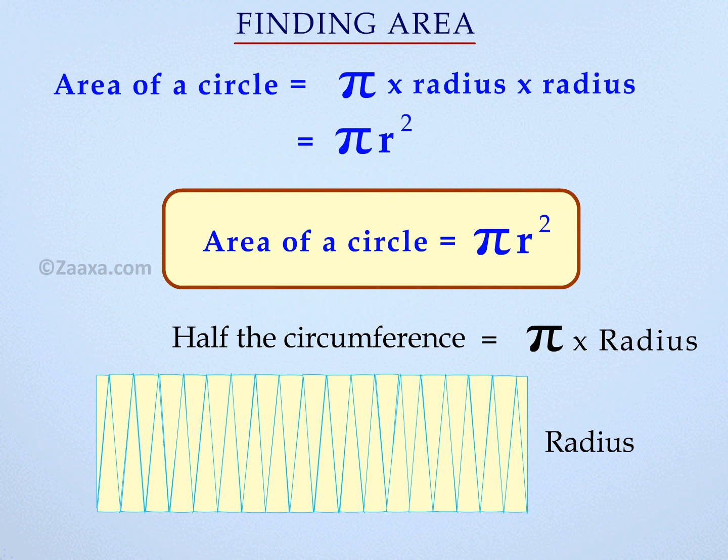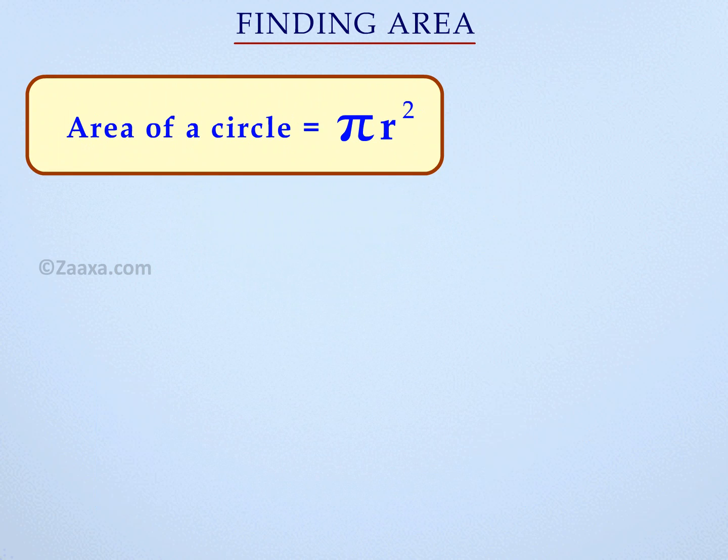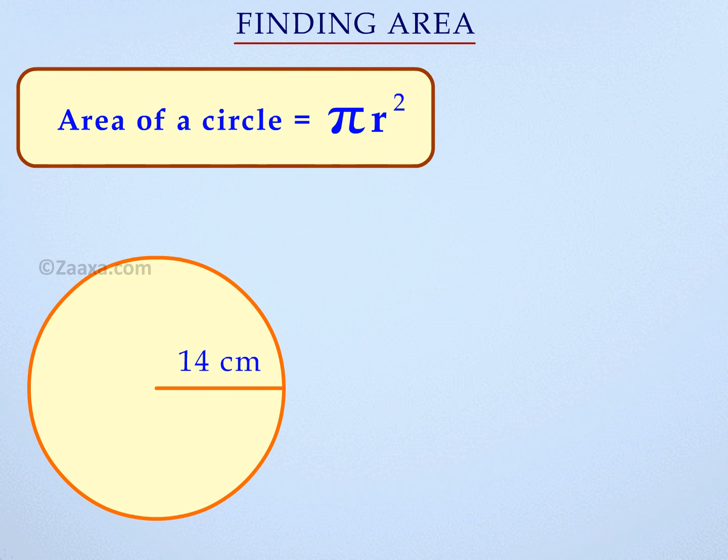Thus, to find the area of a circle we use the formula pi r squared. Let us find the area of a circle whose radius is 14 cm. Area is equal to pi r squared, 22 over 7 times 14 times 14 is equal to 616. Hence the area of the circle is 616 square centimeters.